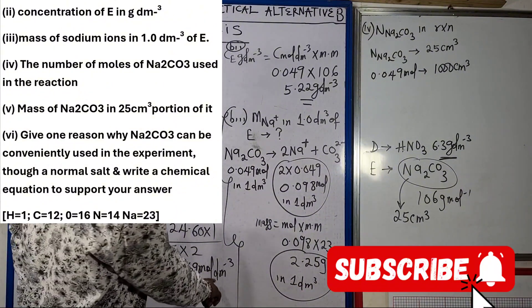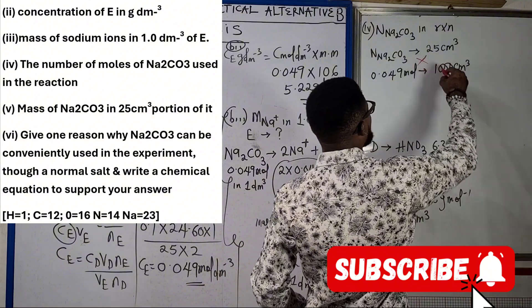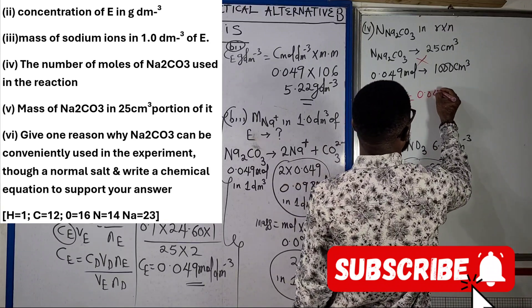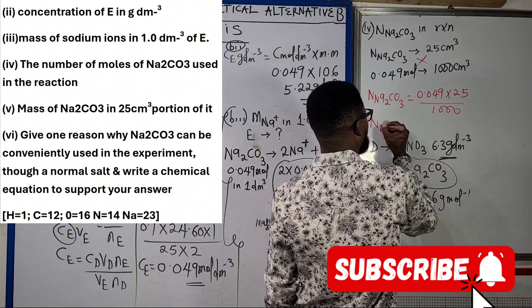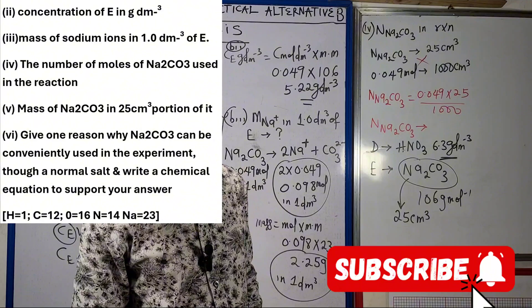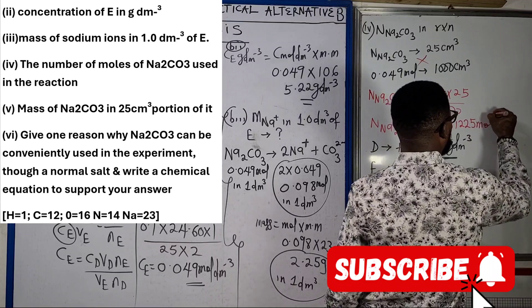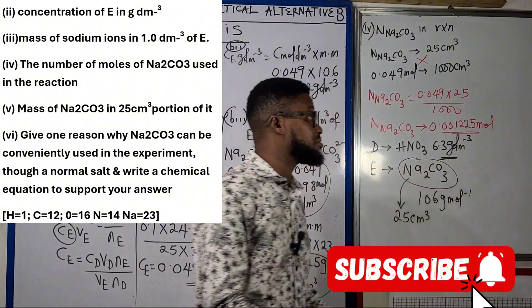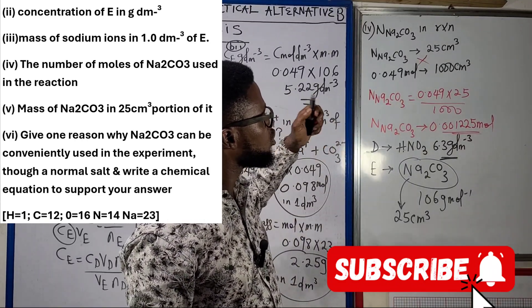Number of moles of sodium trioxocarbonate(IV) = 0.049 × 25 ÷ 1000 = 0.001225 moles. You can round this to three decimal places if you wish. That ends that question, since the question asks for the number of moles of sodium carbonate used in the reaction, where 25 cm³ was pipetted.